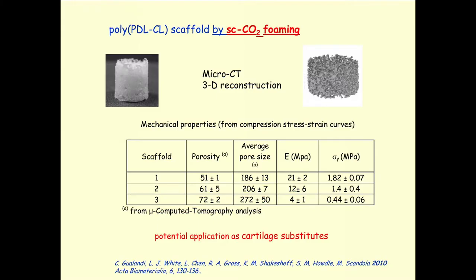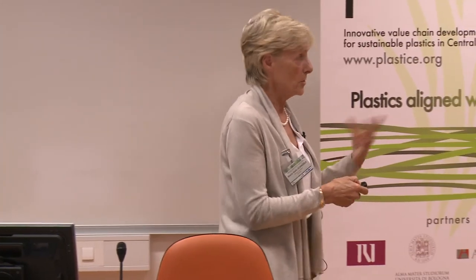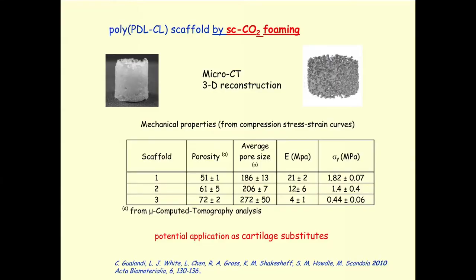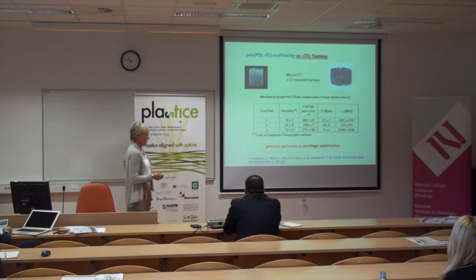Another way to tune the degradation rate is to change fiber dimensions, porosity, and other structural parameters. We also prepared scaffolds by supercritical CO₂ foaming using one of those co-polymers. These three-dimensional scaffolds for bone or cartilage substitution require suitable porosity, and we could tune the mechanical properties and crystallinity of the polymer together with porosity — getting good scaffolds for cartilage substitution by controlling the CO₂ foaming experimental parameters.